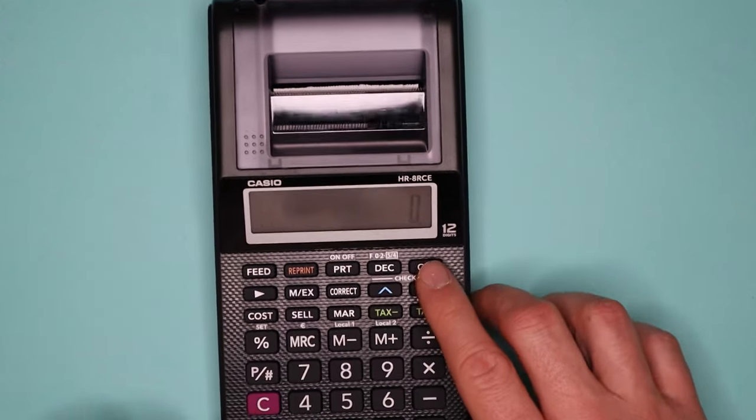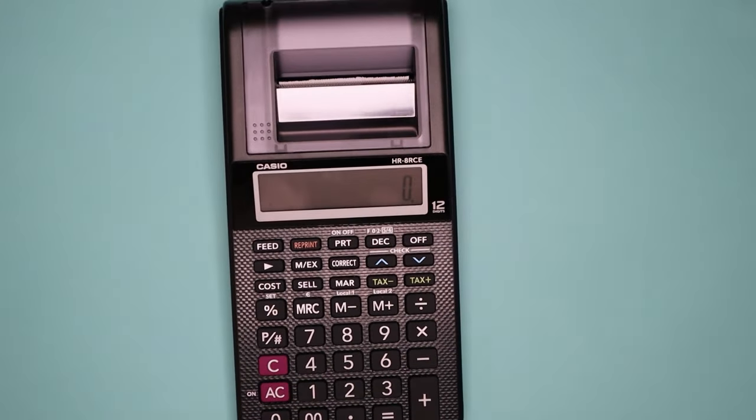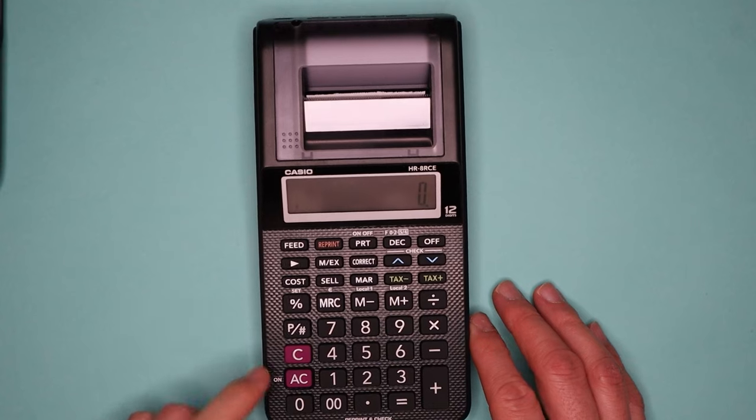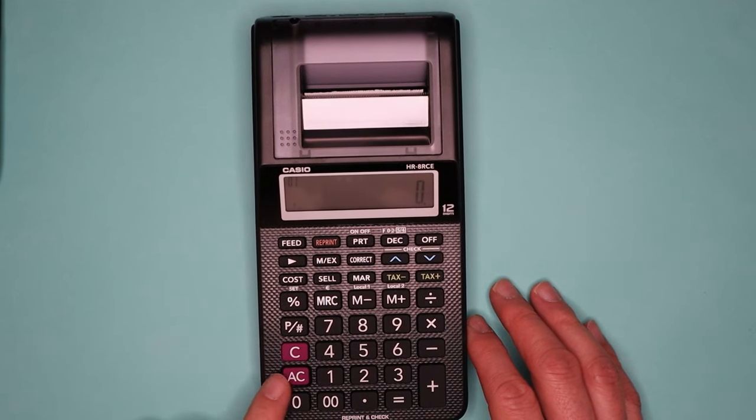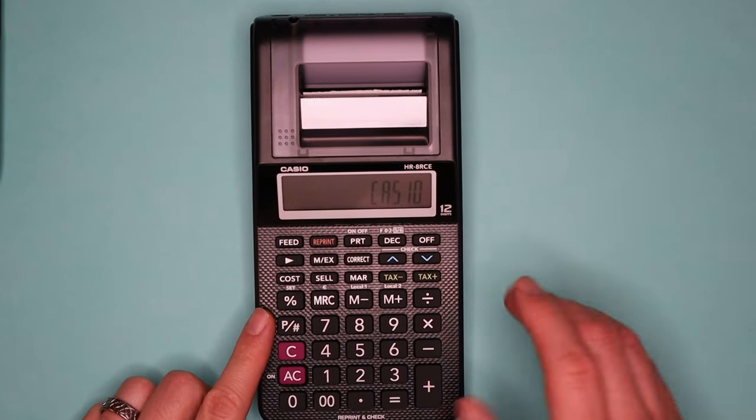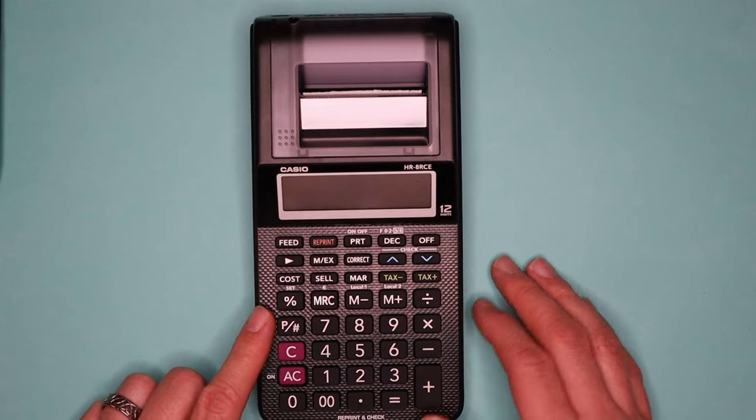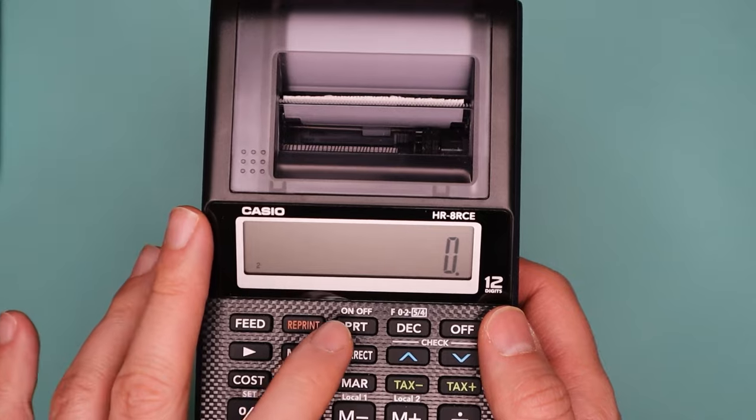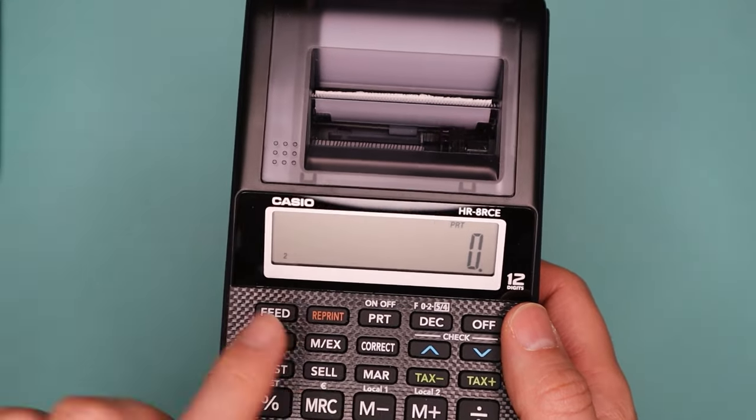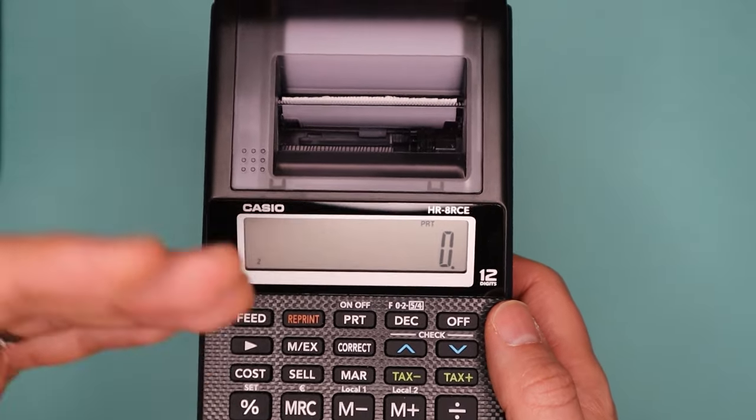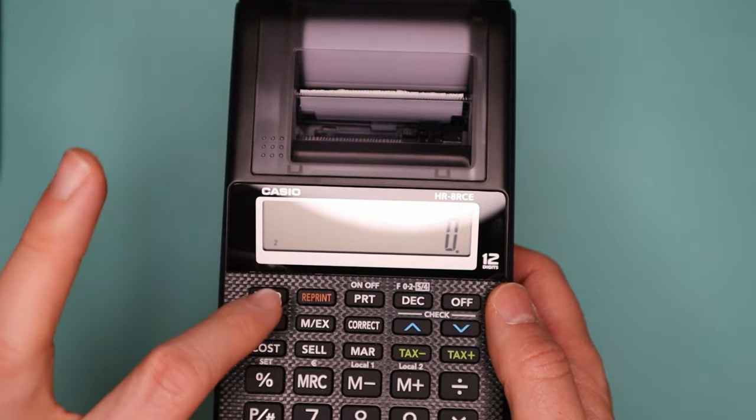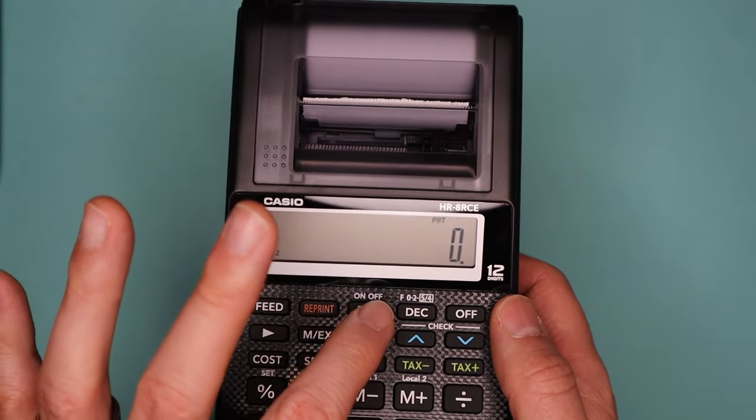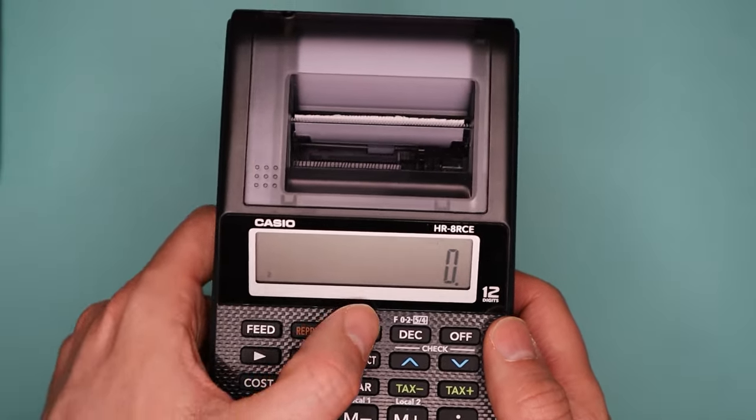On button. Zoom out a little bit. Got the on button there, which is also the AC button. Got an off button. On. So you can either turn printing on or if you want to print something after, you can use the reprint button there.